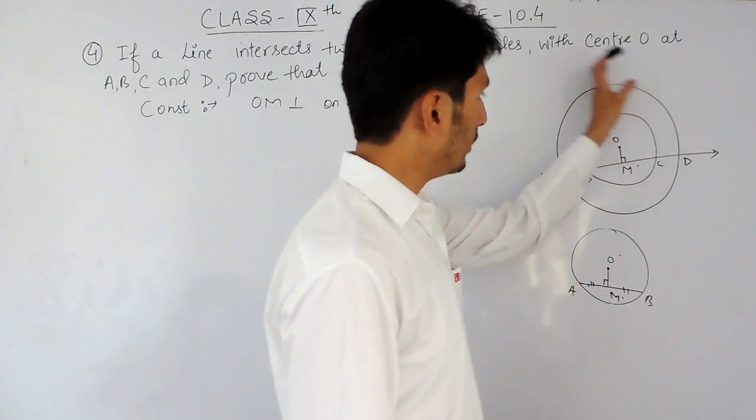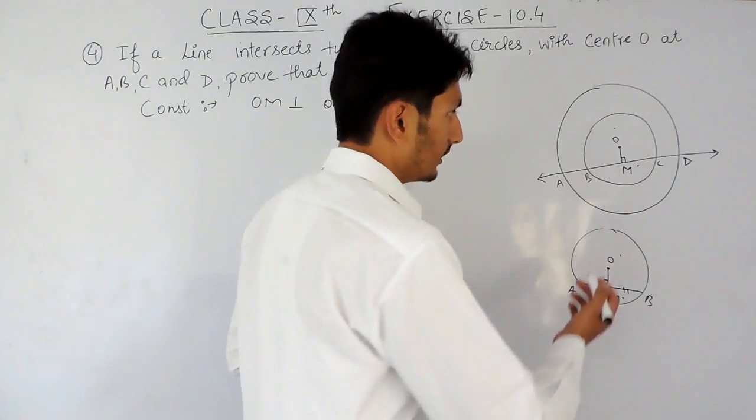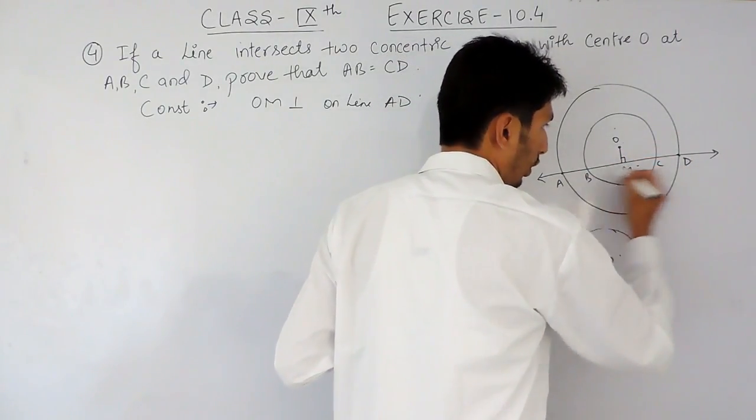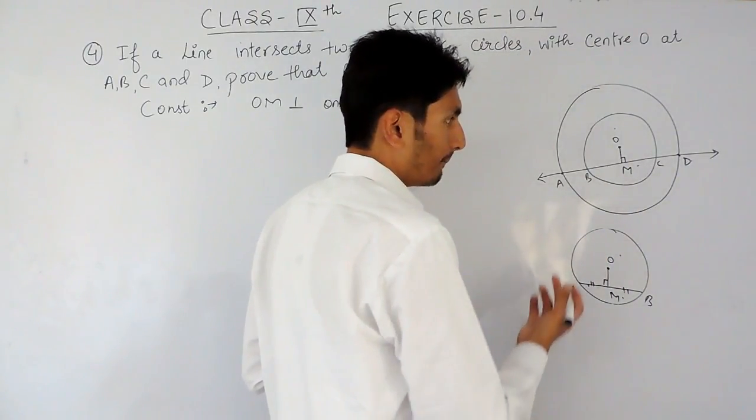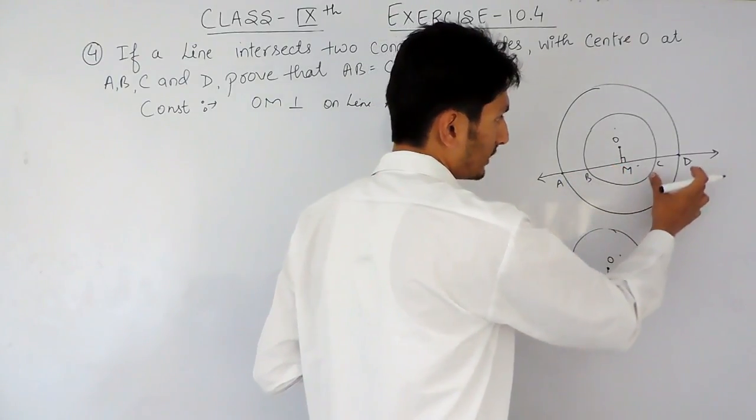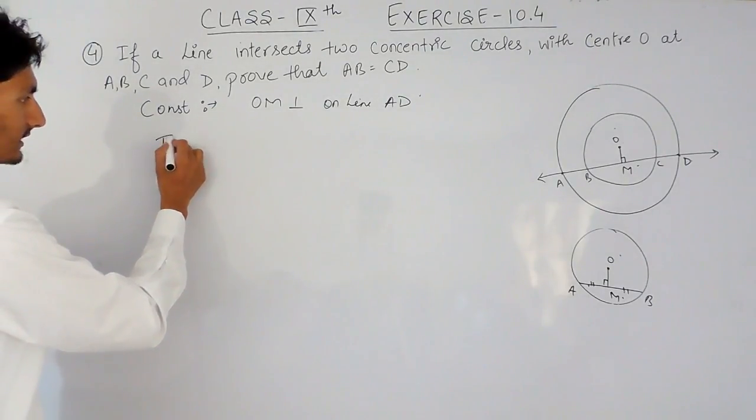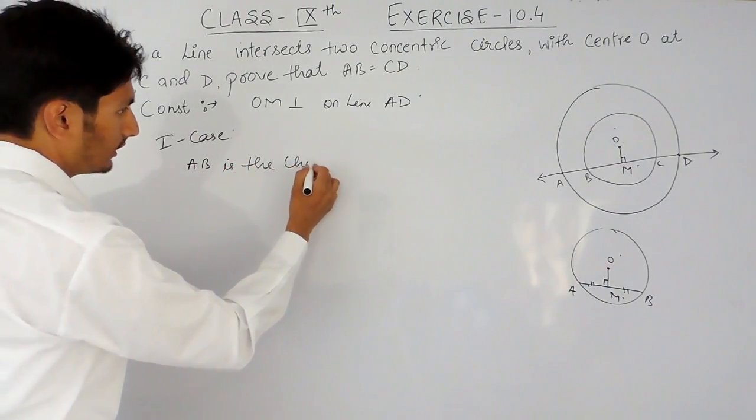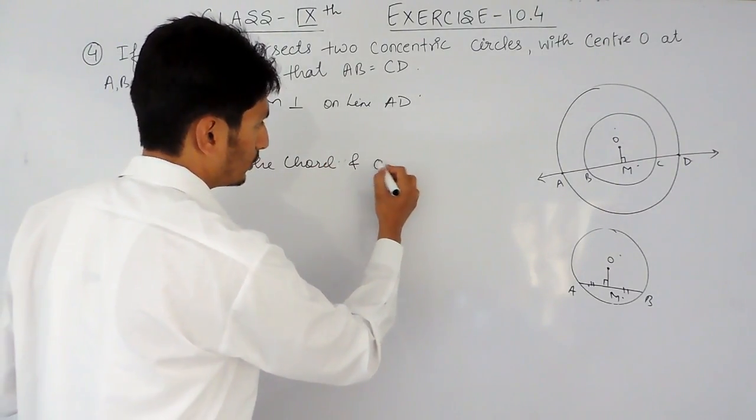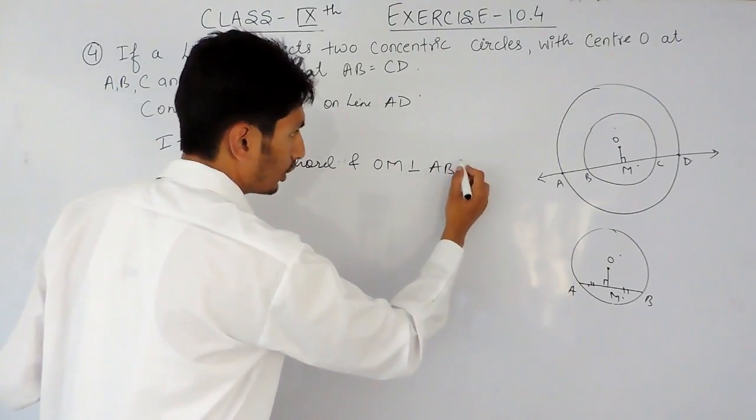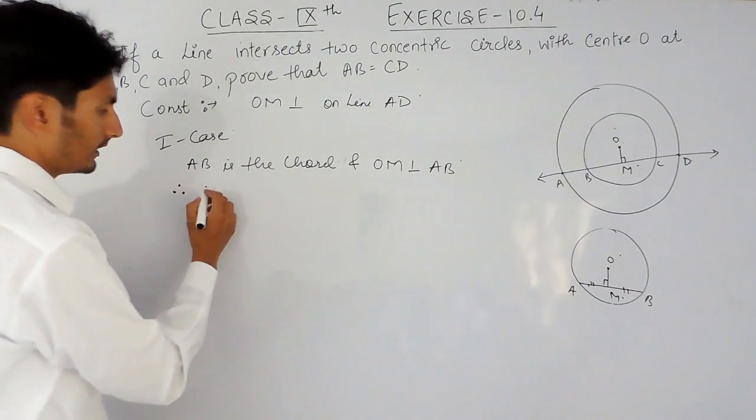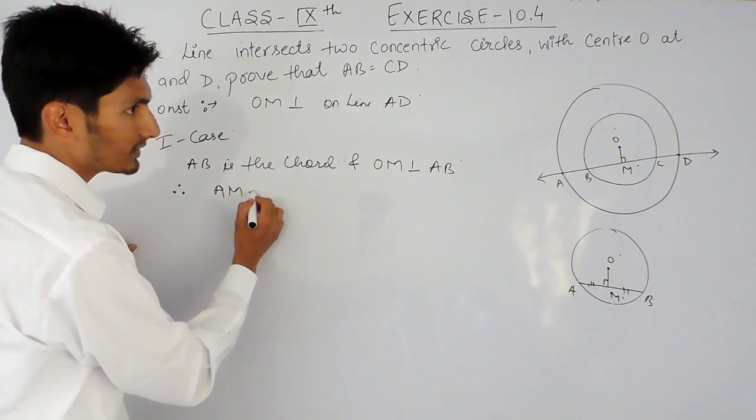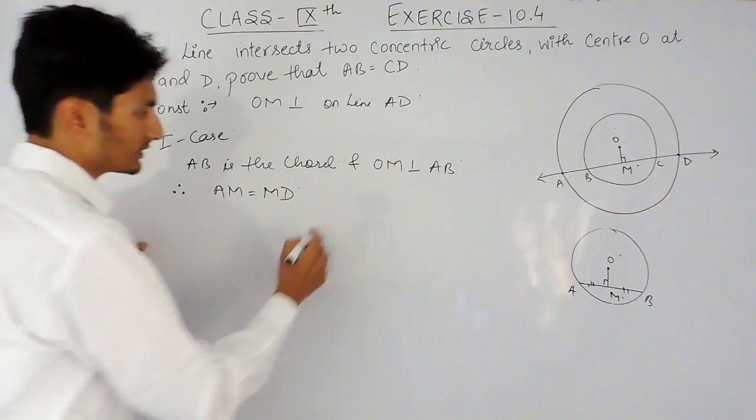Same theorem we have to apply. First of all, for this bigger circle, AD is the chord and OM is the perpendicular on this chord. So obviously, it should bisect the chord. Means, the length of AM must be equal to the length of MD. So, in first case, AD is the chord and OM is perpendicular on this chord AD. Therefore, it should divide this chord. This is our first equation.